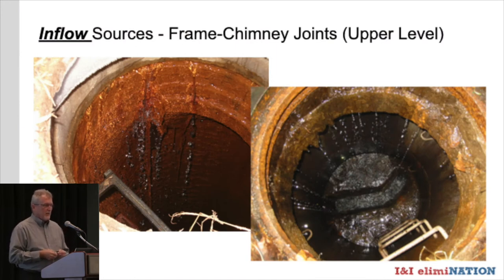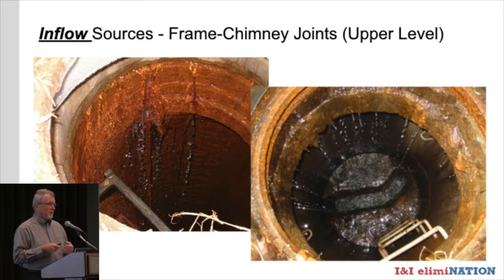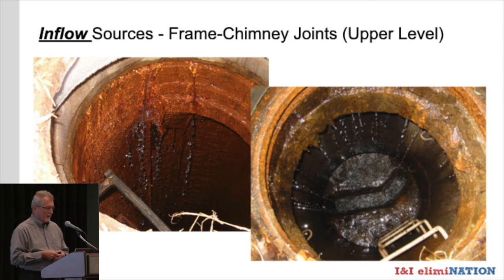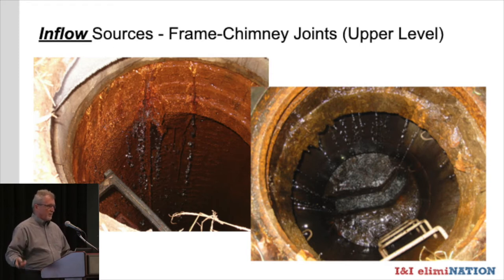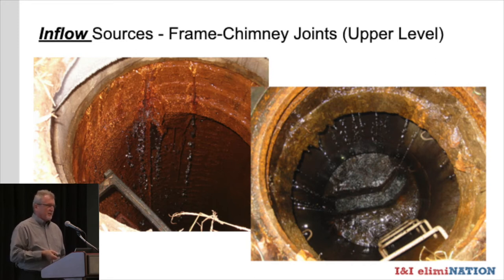Looking at inflow sources in the upper portion of the manhole — the frame chimney joint, anything from the cone up to the frame — that involves broken and deteriorated bricks, precast concrete grade rings, and mortar joints. Those things typically deteriorate over time and you lose any kind of seal that was there when they were installed. One example is during a snow melt in a field where the water was just draining in because the ground below was frozen — the water didn't have anywhere to go except through that frame joint. The other is an active leak during a rainstorm. Getting out during or post-rainstorm to identify these problem areas and defects is very useful.